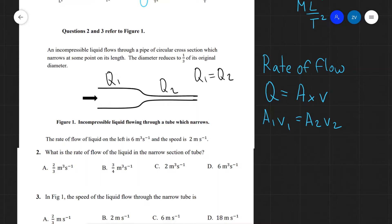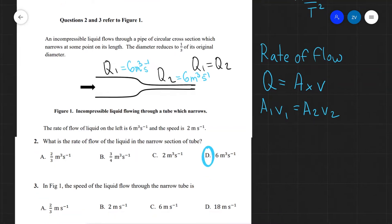Okay so anyways back to the question, what is the rate of flow of the liquid in the narrow section of the tube? Well we're given that the rate of flow on the left is six, so Q is six meters cubed s to the power of minus one on the left. So it's going to be six as well on the right due to this continuity equation which I've just described over here. So the correct answer is D.